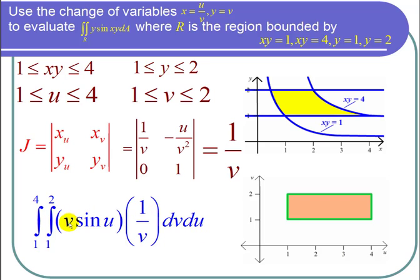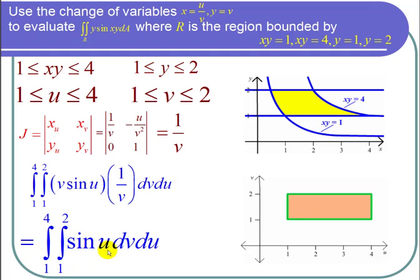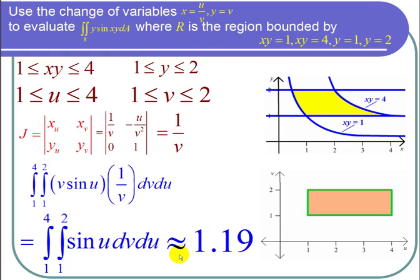So that's nice. The v and the 1 over v cancel. So I get the double integral of sine of u dv du. And this is a pretty simple integral. I worked this out and I got that the double integral over our region is approximately equal to 1.19, and I'm done with the problem.